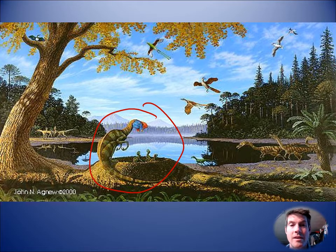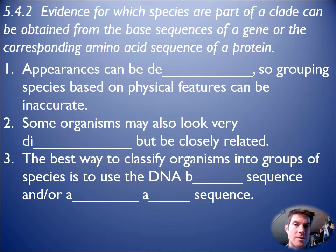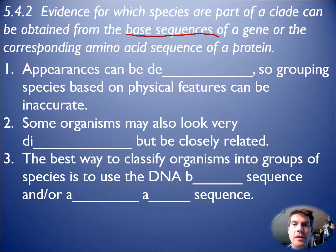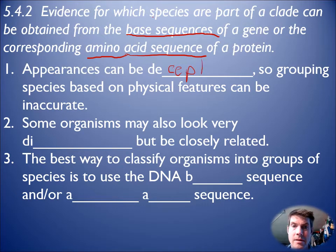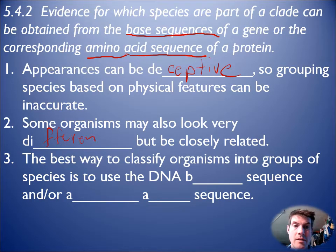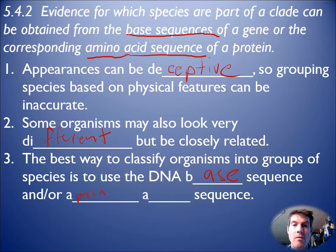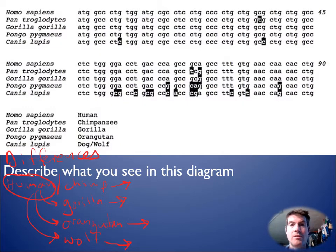Grouping different organisms together, you can look at base sequence or amino acid sequence to look for similarities. We used to use just appearances, but they can be very deceptive — you can look the same but be really different inside, and vice versa. Some organisms look very different but are closely related. The best thing to do is use a base sequence or amino acid sequence — that's the gold standard being used today.